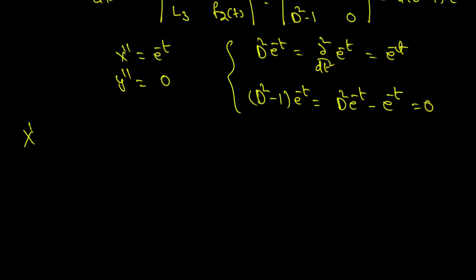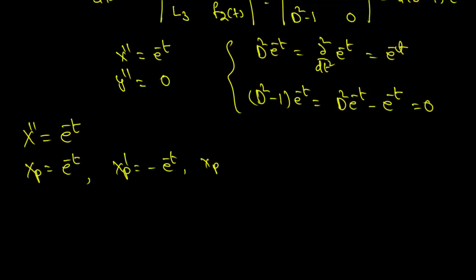Now solving x'' = e^(−t), we find a particular solution xp = e^(−t). We can verify: xp' = −e^(−t) and xp'' = e^(−t), which confirms it satisfies the equation.